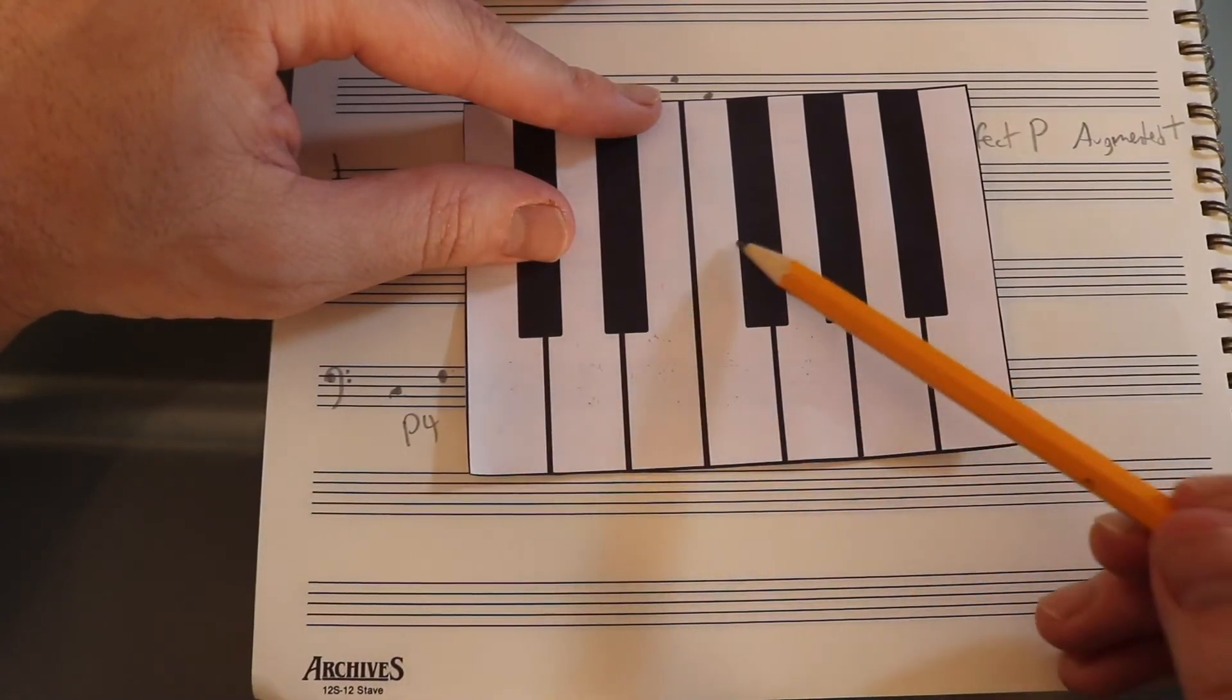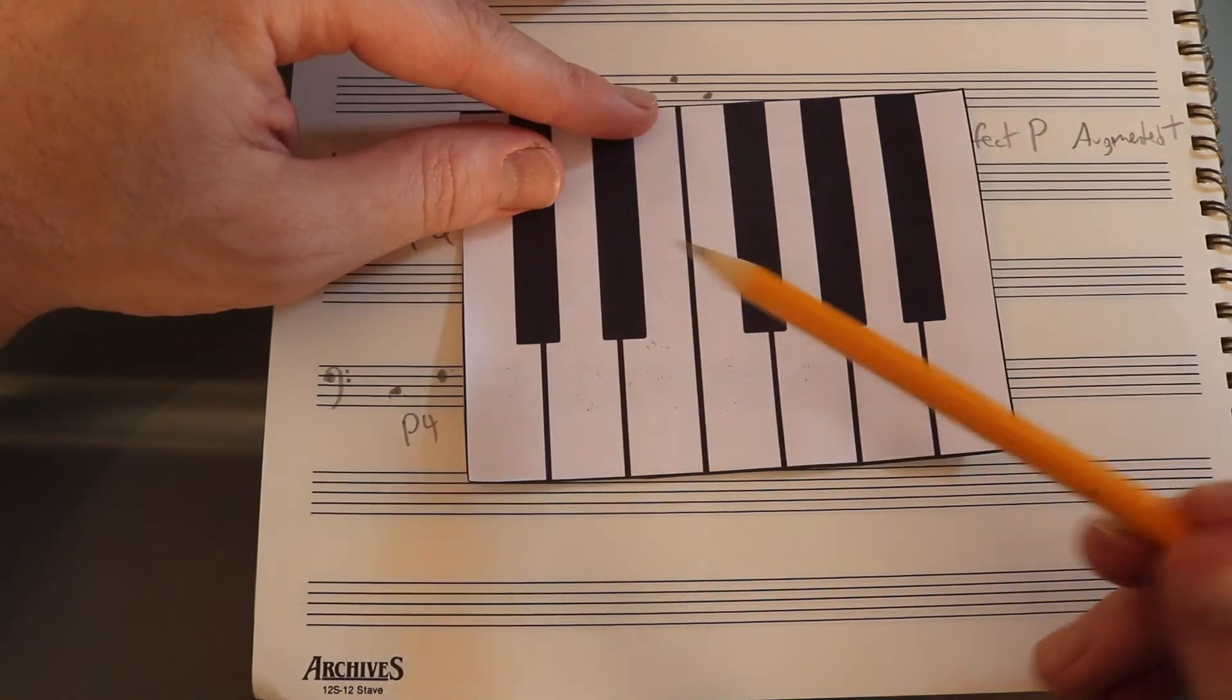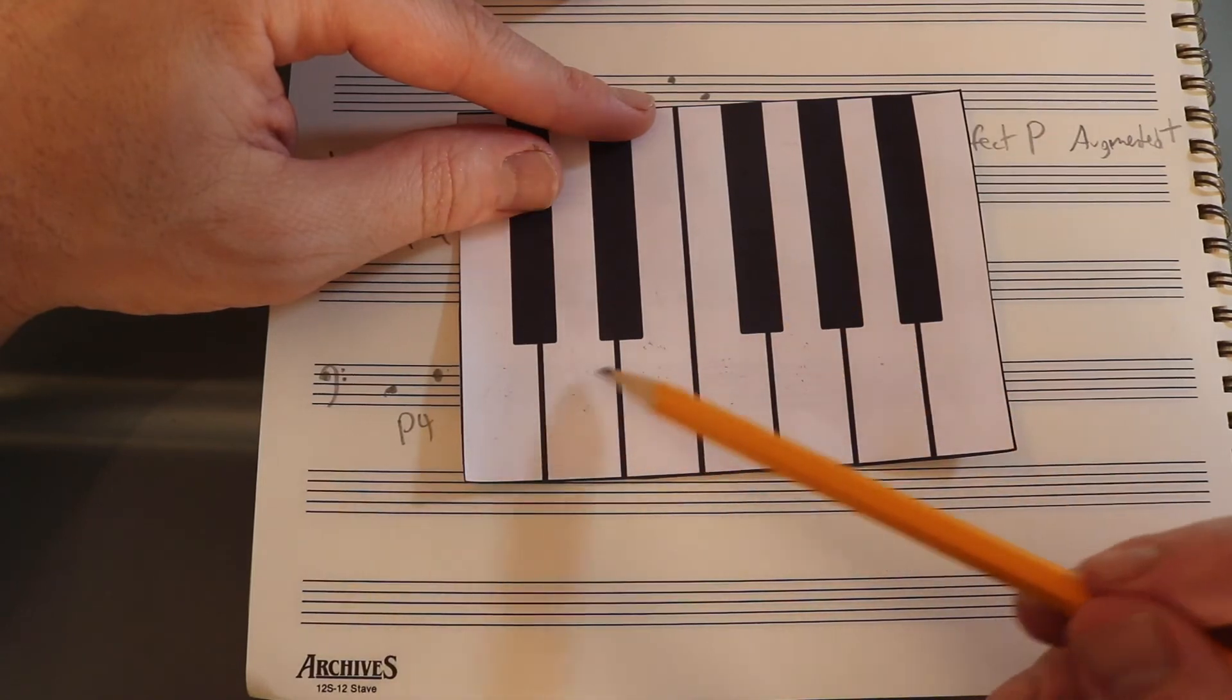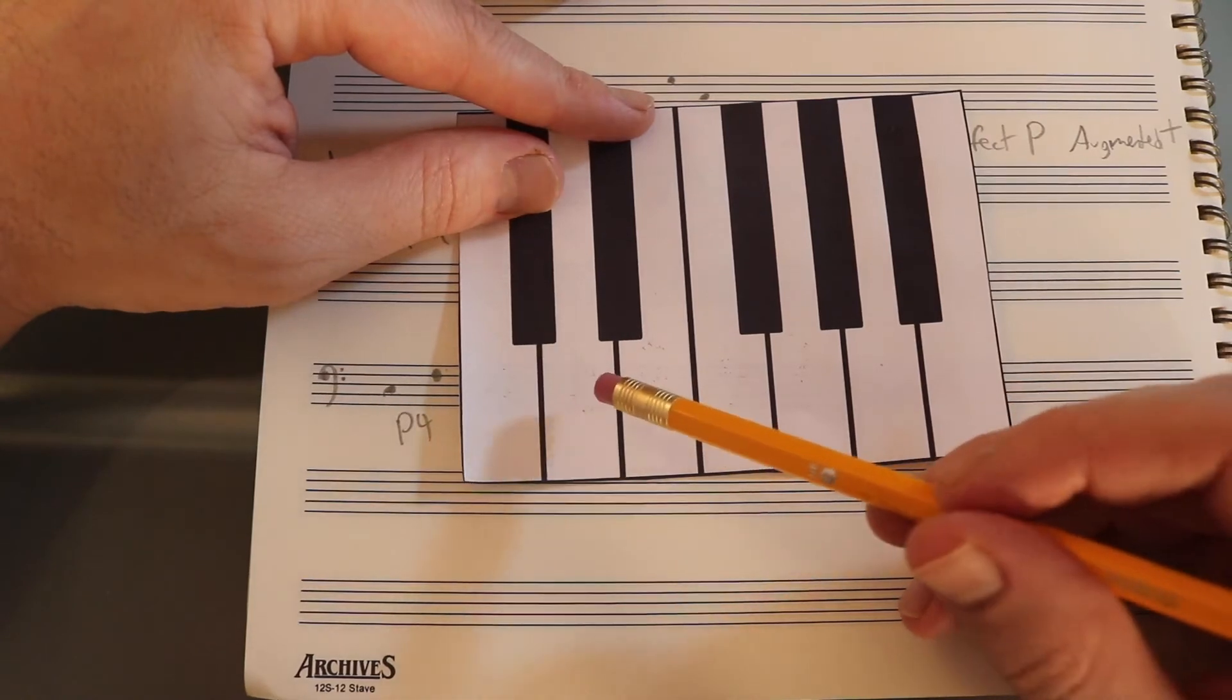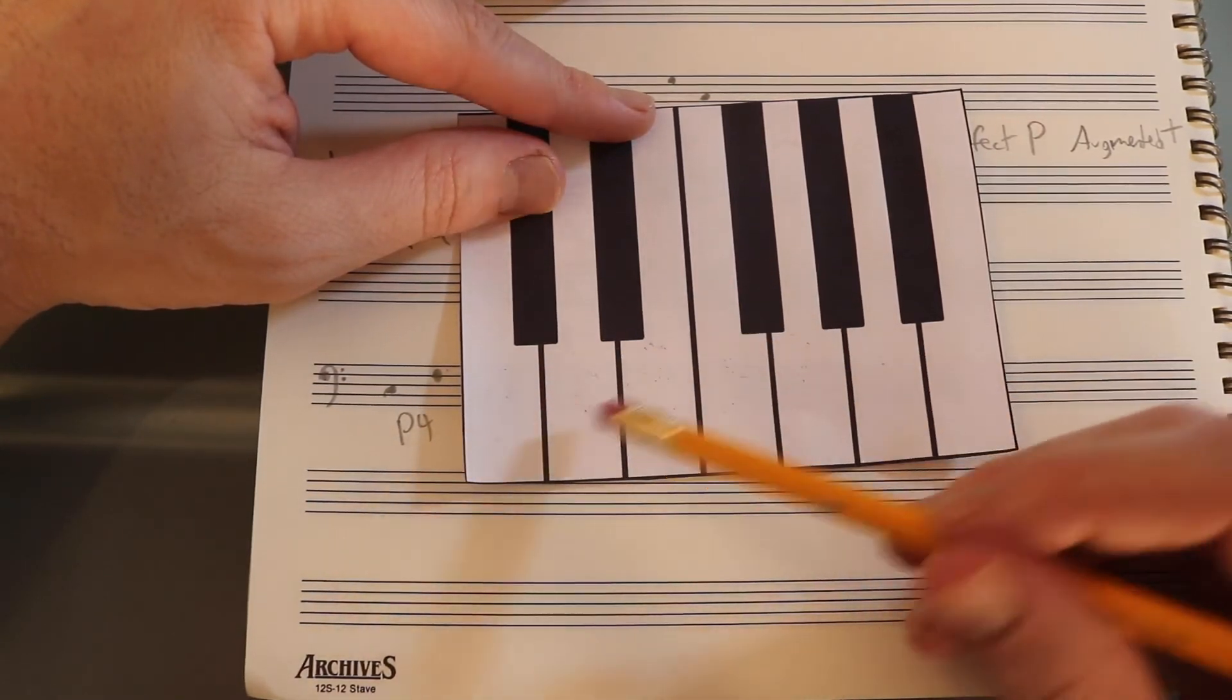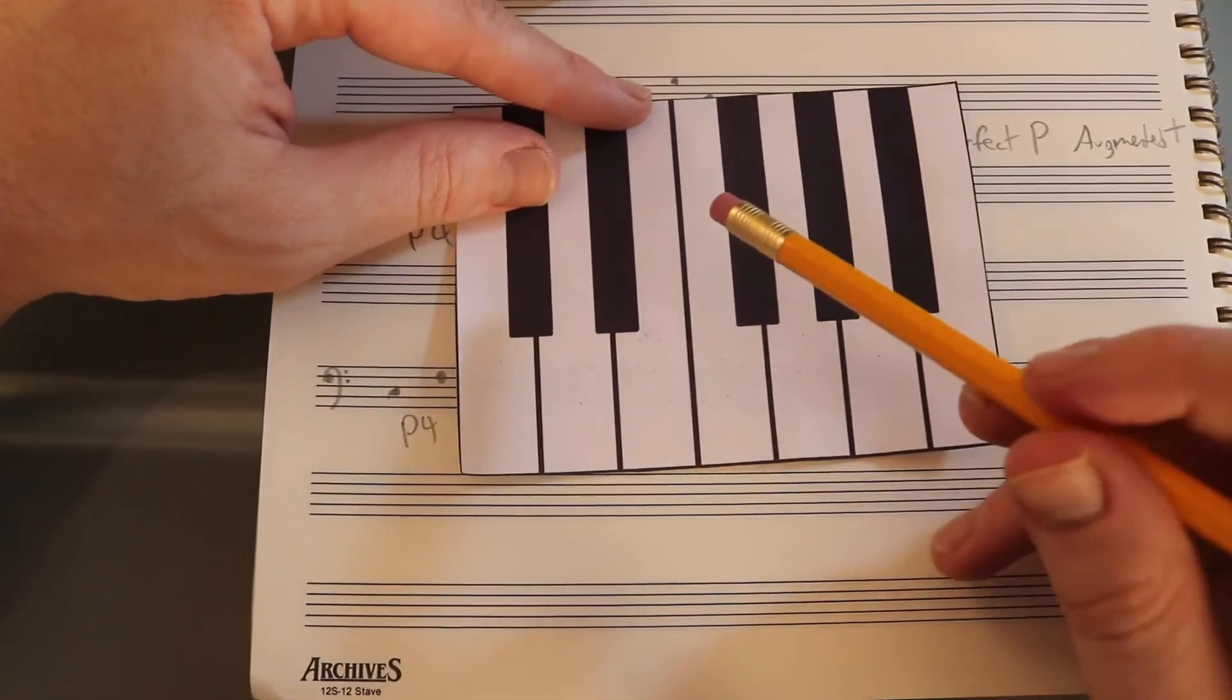Here's why it's called a tritone. It's one, two, three tones, or three whole steps, right? I'll do that again. C to D is a whole step. D to E is a whole step. E to F-sharp is a whole step. That's three whole steps, or three tones, tritone. You don't really need to know the explanation if you don't want to, but it might help just to remember that that interval is called generically a tritone. What's nice about using the word tritone is it doesn't tell you if it's a fourth or fifth.